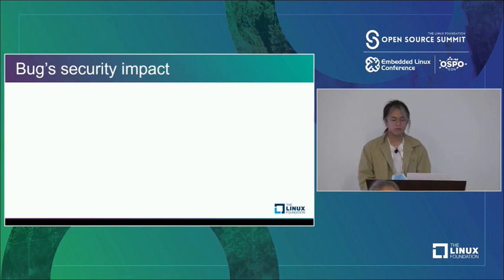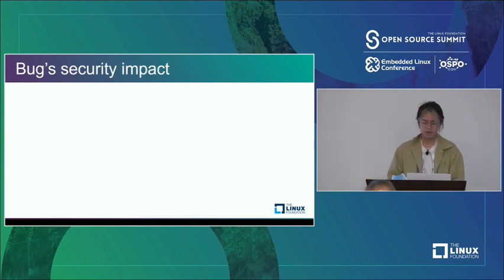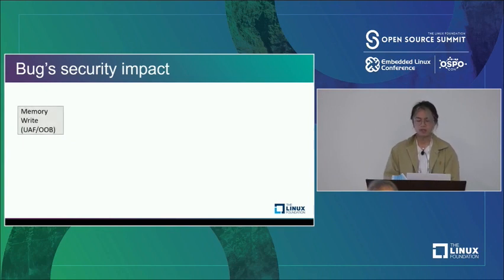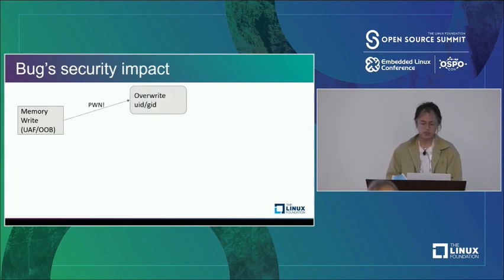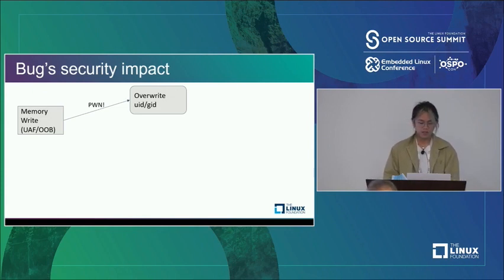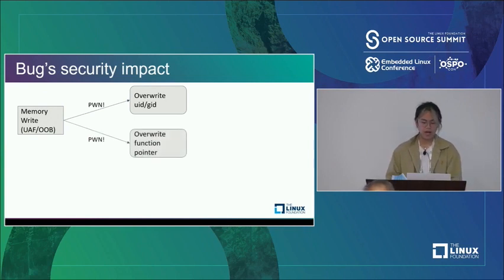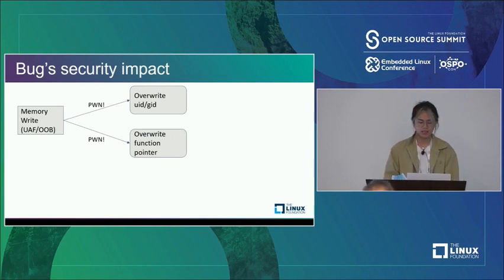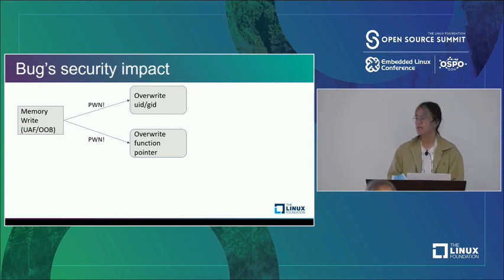Let's look at the security impact of each bug type. Memory write bugs have severe security impact in terms of compromising the kernel. For example, by overwriting the UID or GID, an attacker can achieve local privilege escalation. Or if one can override a function pointer, they might hijack the control flow, which is considered a top-risk exploitable capability. Therefore, memory write bugs are high-risk bugs.